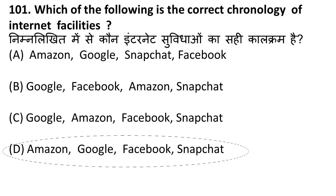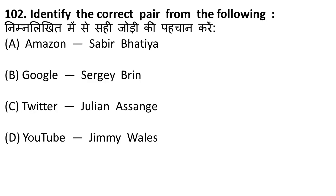Next question: identify the correct pair from the following. Amazon–Sabir Bhatia is incorrect — Amazon was founded by Jeff Bezos and Sabir Bhatia is known for Hotmail. Twitter was founded by Jack Dorsey. Julian Assange is known for WikiLeaks. YouTube was founded by Javed Karim. Jimmy Wales is known for Wikipedia. Julian Assange is for WikiLeaks. The correct answer is Google — founded by Sergey Brin — option B.